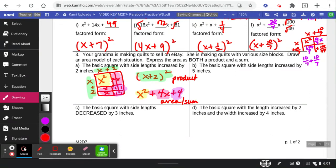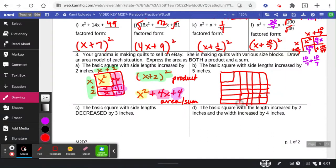Okay, so this up here is the product or the length. And this down here is the area or the sum. Okay, the basic square with side lengths extended by 5.